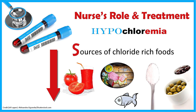The last S is for sources of chloride-rich food. If your patient can take things by mouth, encourage them to consume foods that are high in chloride. Anything salty or high in sodium is also going to have chloride — so table salt, tomato juice, olives, seafood, processed meats, and canned foods are all rich in chloride.